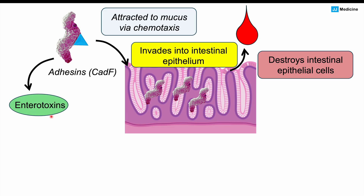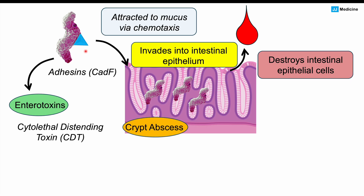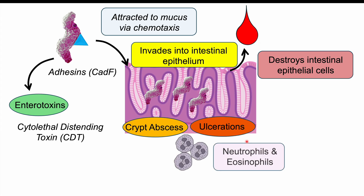The bacteria can also release certain endotoxins. Some strains release heat-labile cholera-like enterotoxins that cause watery diarrhea. Some strains release cytolethal distending toxin, which can prevent immune response and worsen severity. There can also be crypt abscesses — pockets of abscess due to the bacterial infection — and ulcerations. All of these lead to immune response with neutrophils and eosinophils, causing inflammation, ulcerations, abscesses, and damage to intestinal epithelial cells.